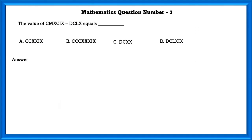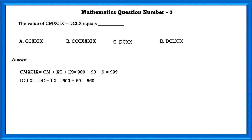Mathematics question number 3. The value of CMXCIX minus DCLX. CMXCIX is 999 and DCLX is 660. If we subtract those two we get 339, which is equal to CCCXXXIX.